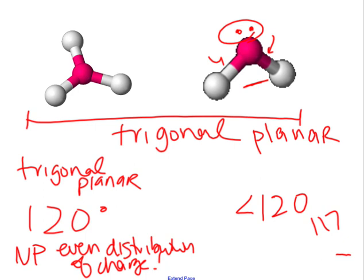The AP is not having you memorize a bunch of bond angles. I need you to understand, though, that it's less than what it was because of the existence of the lone pair. If you want to technically know, it's about 117. What does this look like shape-wise? It's bent.